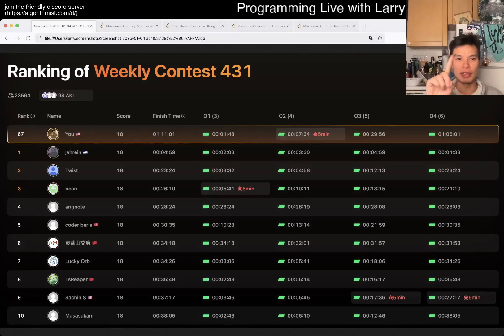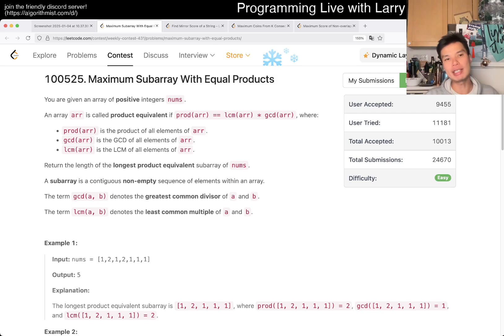Hey everybody, this is Larry. This is me going with Q1 of the Weekly Contest 431, Maximum Subarray with Equal Products. Hit the like button, subscribe button, join me on Discord, let me know what you think about this one.